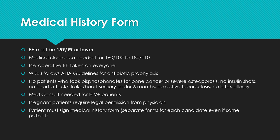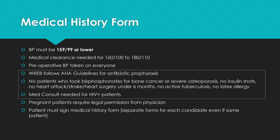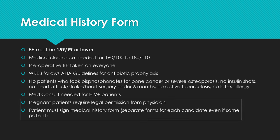A medical history form is submitted for all patients — see pages 25 and 26 of the candidate guide. You'll take pre-op blood pressure; it must be 159 over 99 or lower. If it's between 160–180 over 100–110, you need medical clearance beforehand. REBS follows AHA guidelines for antibiotic prophylaxis. Excluded patients include those on bisphosphonates for bone cancer or severe osteoporosis, patients on insulin shots, those with a heart attack, stroke, or heart injury in the last six months, active tuberculosis, or latex allergies. HIV-positive patients need a medical consult; pregnant patients need legal permission from a physician. Patients must sign the medical history form confirming accuracy.